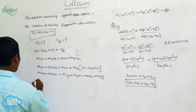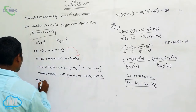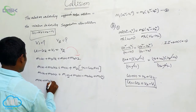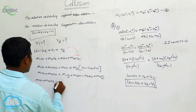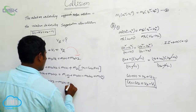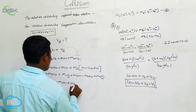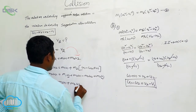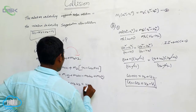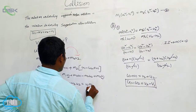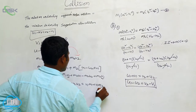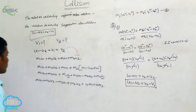After rearranging: M1 U1 plus M2 U2 minus M2 U1 plus M2 U2 — collecting all V1 terms together. Which term is common? V1 appears as M1 V1 and M2 V1, so V1 times (M1 plus M2) is on the right-hand side.